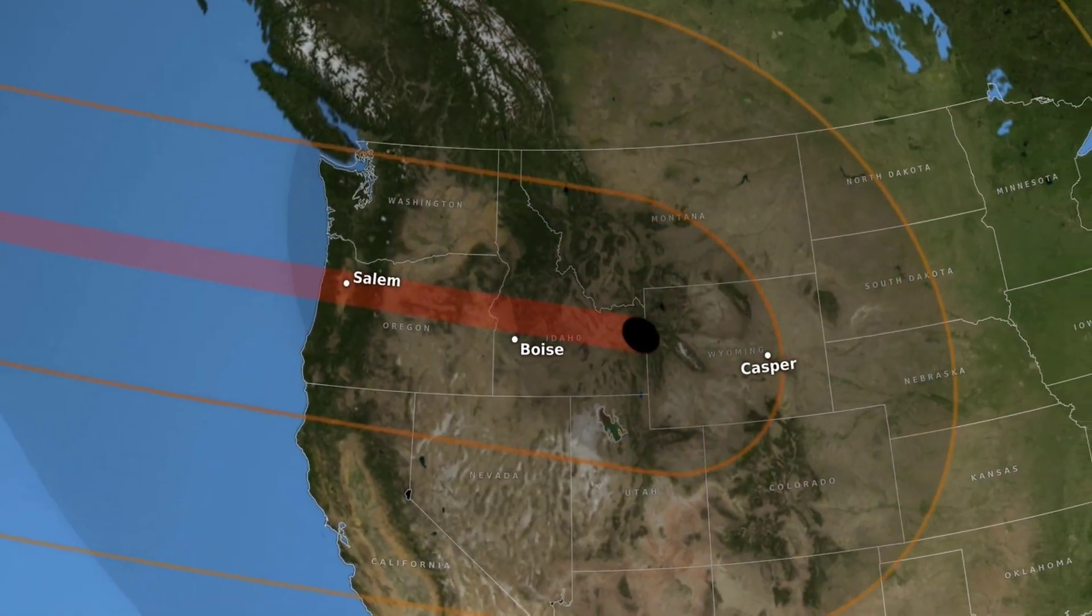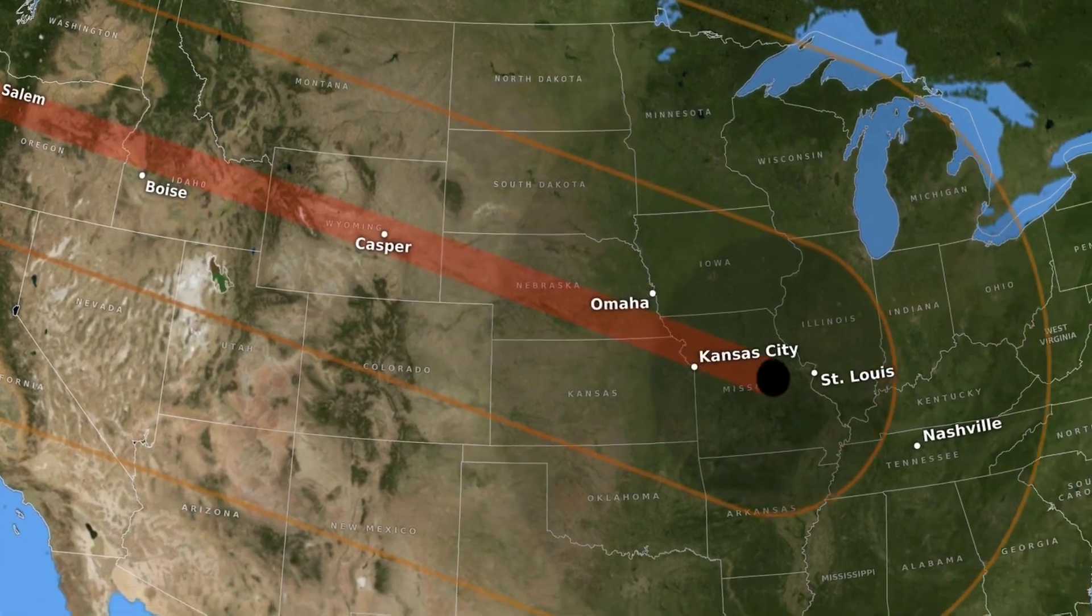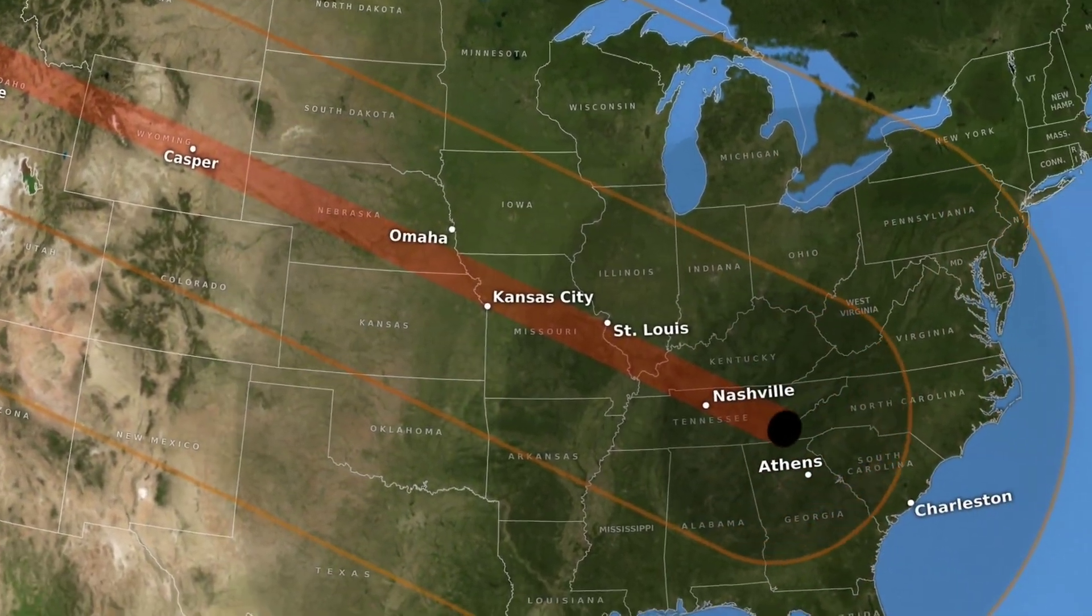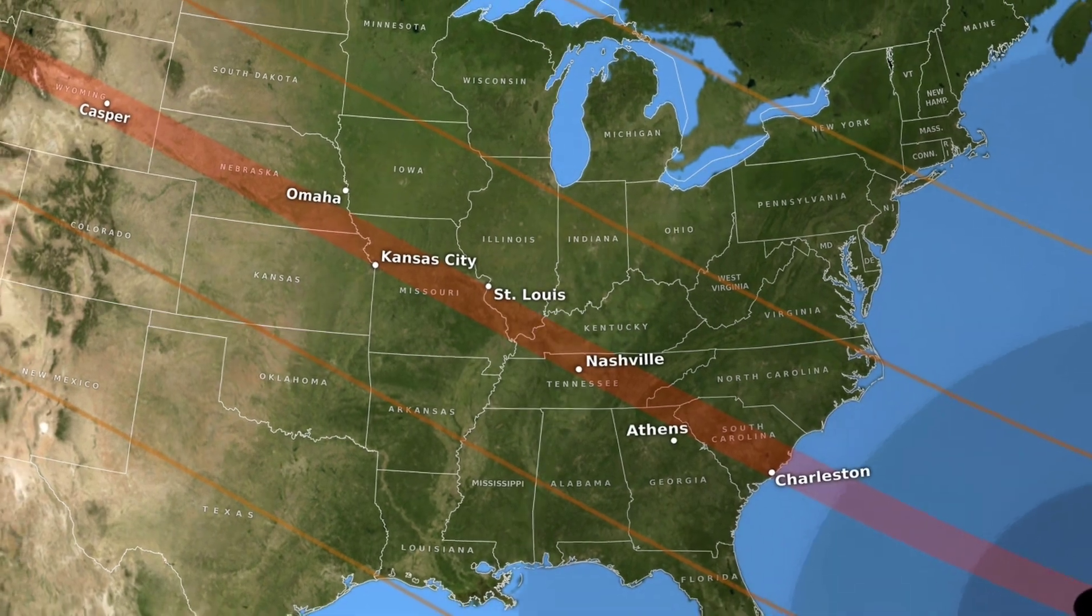Today's total eclipse passes about 650 miles south of us here in Rochester, New York, so we'll only be experiencing a partial eclipse today. But tens of thousands of people are flocking to the path of totality to witness today's spectacular total eclipse.